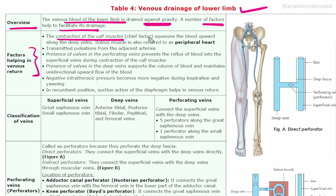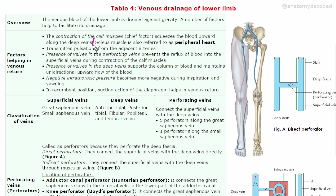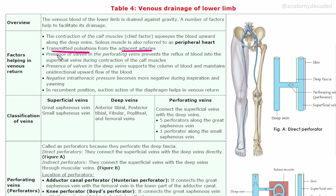There is contraction of calf muscles which squeezes the blood upwards along the deep veins. In the posterior compartment of the leg, the soleus muscle is referred to as the peripheral heart. Then there are transmitted pulsations from the adjacent arteries which help in venous return. There are also valves in the perforating veins which prevent reflux of blood, and valves in the deep veins support the column of blood and maintain unidirectional flow.